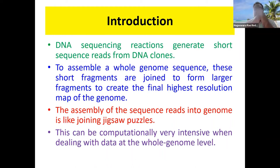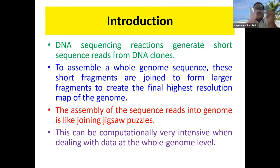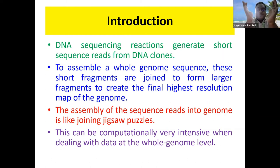We know that DNA sequencing reactions generate sequence reads from DNA clones. We need to assemble these genome sequencing reads into a large, high-resolution map of the genome. Assembling the genome is just like a jigsaw puzzle — we have to carefully look at where the clues are and how we can join those pieces of information to get a complete image.